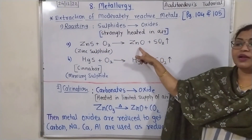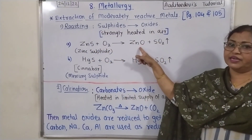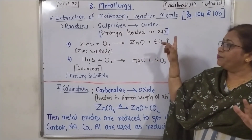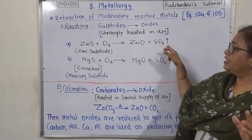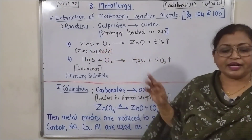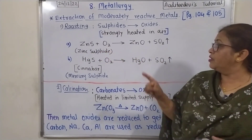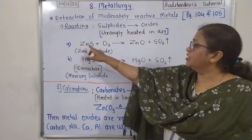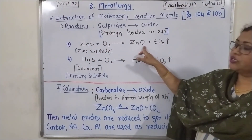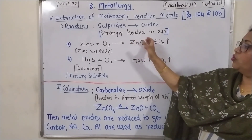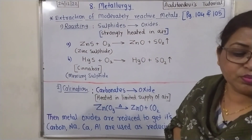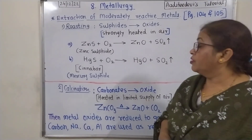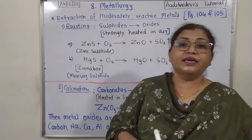It gives metal oxide with liberation of sulfur dioxide gas. To balance the reaction, we have to multiply zinc sulfide by 2. We have 2ZnS reacting with oxygen.